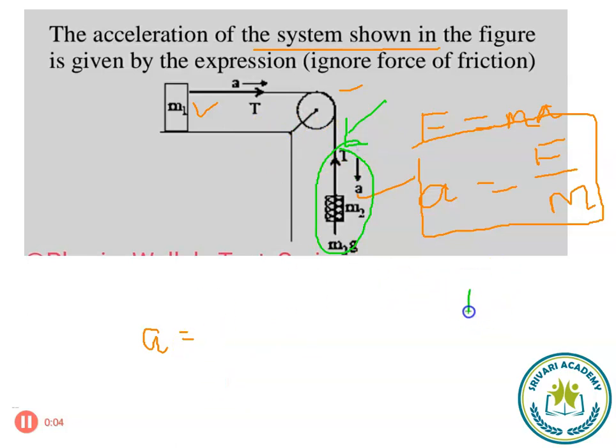F is equal to, if there are too many forces then we can add them, but in this particular system the only force acting on the system is F equals ma. Mass into what is the acceleration here? g. So F is equal to m2g.